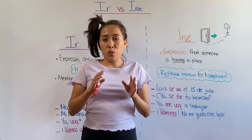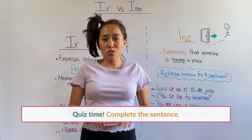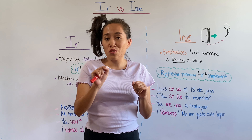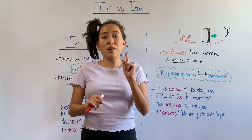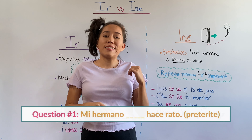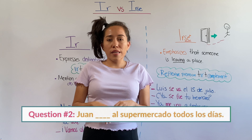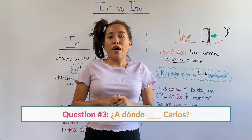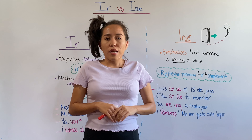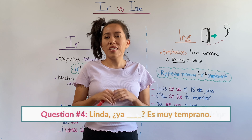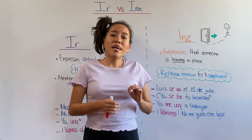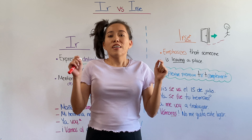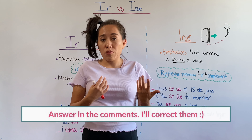Before we go, let me give you a quick quiz so you can put these verbs into practice. Just fill in the blanks. Number one — conjugate in the preterite tense: 'Mi hermano ___ hace rato.' Number two: 'Juan ___ al supermercado todos los días.' Number three: '¿A dónde ___ Carlos?' Number four: 'Linda, ya ___ — es muy temprano.' Number five: 'Laura y Juan ___ a ver una película.' Leave your answers in the comments and if I need to give you feedback, I will.